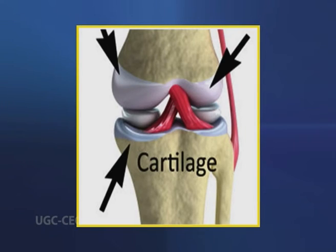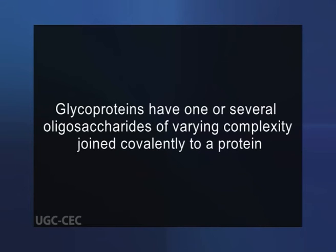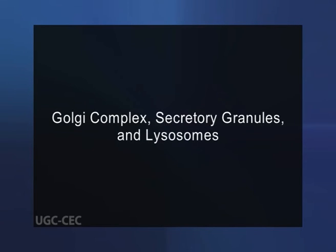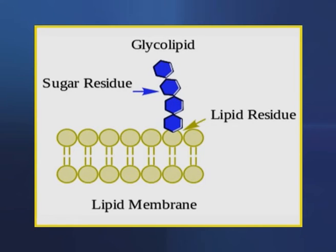Proteoglycans are major components of connective tissue such as cartilage, in which there are many non-covalent interactions with other proteoglycans, proteins and glycosaminoglycans that provide strength and resilience. Glycoproteins have one or several oligosaccharides of varying complexity joined covalently to a protein. They are found on the outer surface of the plasma membrane, in the extracellular matrix and in the blood. Inside cells they are found in specific organelles such as the Golgi complex, secretory granules and lysosomes. Glycolipids are membrane lipids in which the hydrophilic head groups are oligosaccharides that act as specific sites for recognition by carbohydrate-binding proteins.